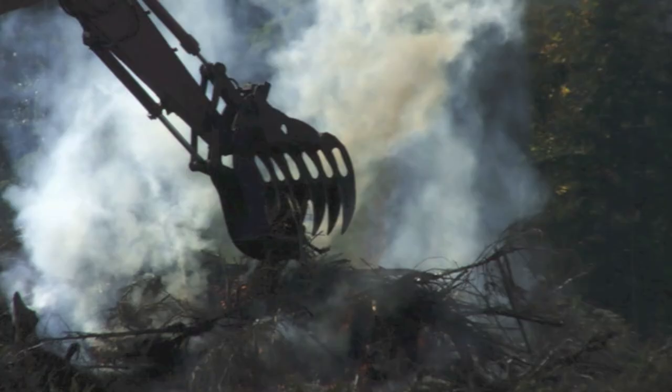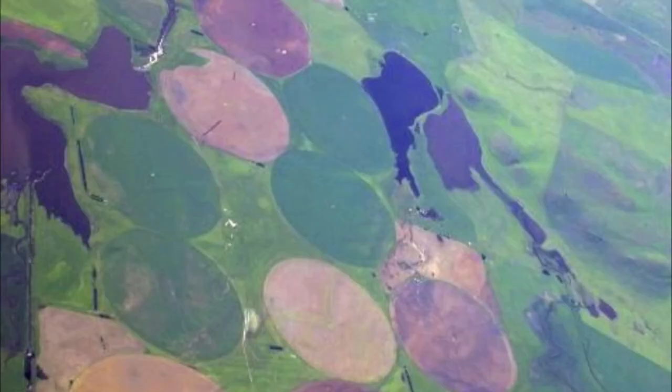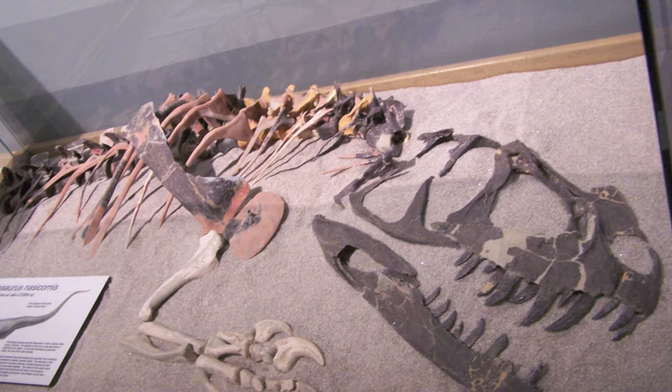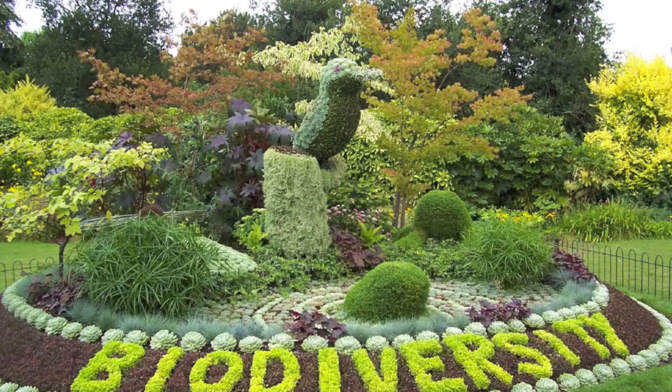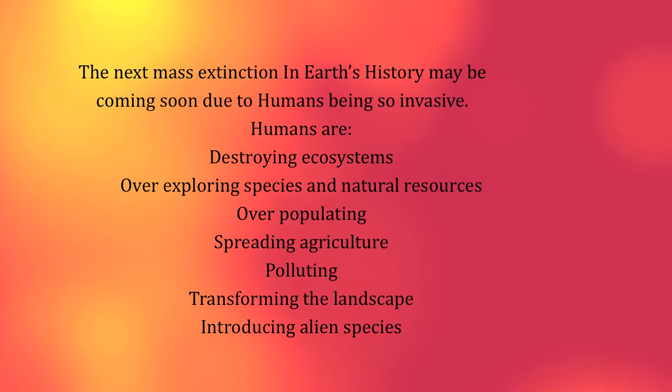We reduce native wildlife habitat by changing the land to build or for agriculture, and it could be argued that our pollution of the Earth is altering very important ecosystem processes. After the first mass extinction, it took 100 million years for the biodiversity of Earth to return to a normal state. The next mass extinction in Earth's history may be coming soon, due to humans being so invasive.